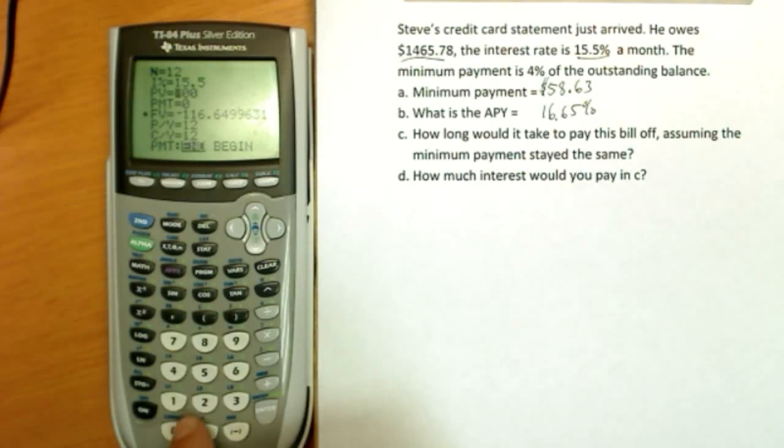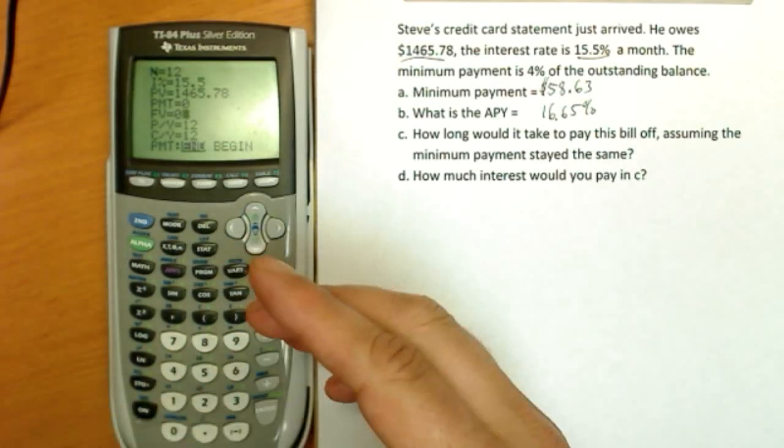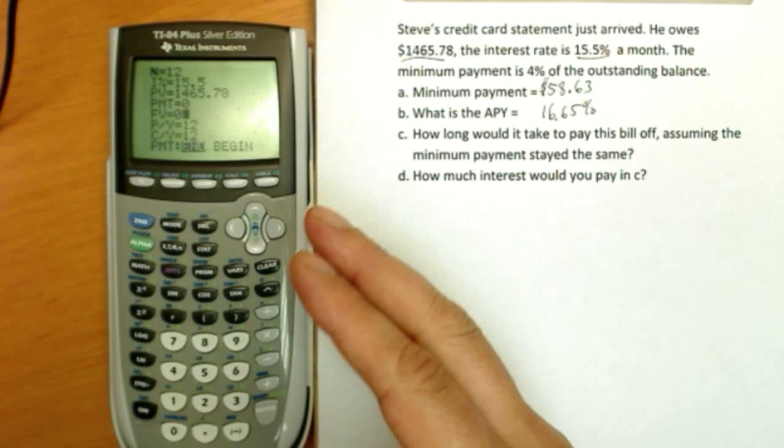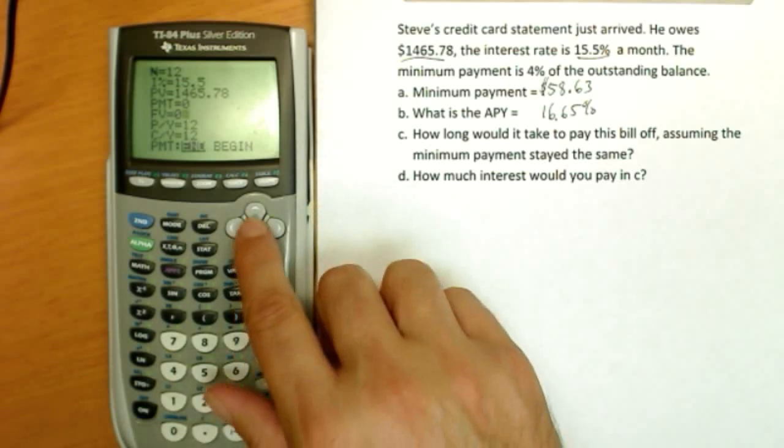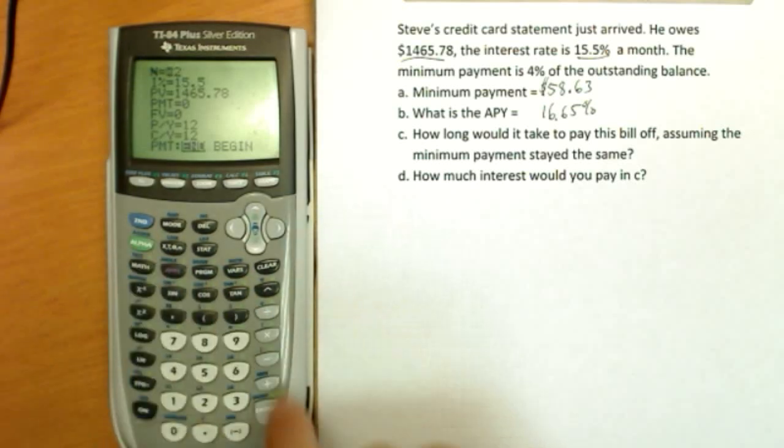Let's have a look at this: $1,465.78, 15.5%. We'll set the future value to 0, 12 for monthly on the payment per year and compounding per year, so we're ready. How long? We're going to find out how many of these monthly periods it would take. Okay, did something wrong. Let's go back in here.